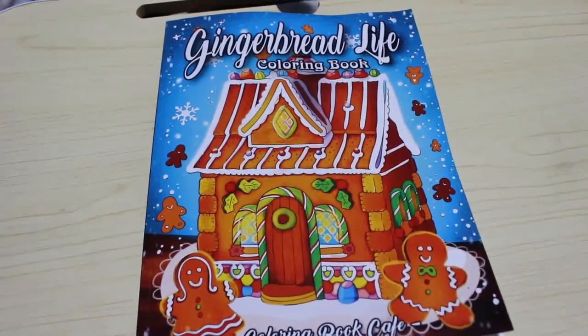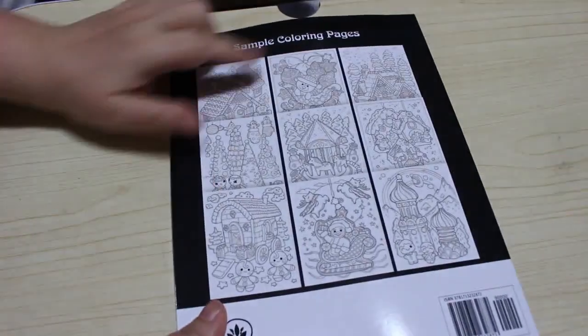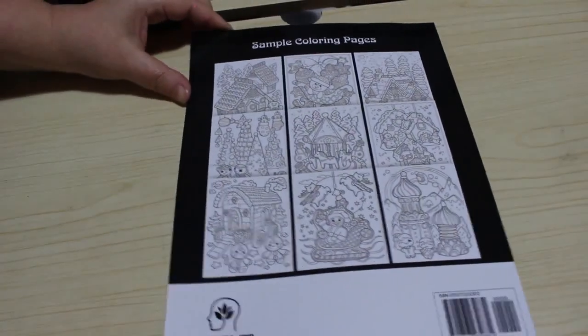This is one of the books I bought for Christmas. So let's have a quick look. There's the front cover, and on the back you get nine of the images that are inside to get an idea of what you're coloring.